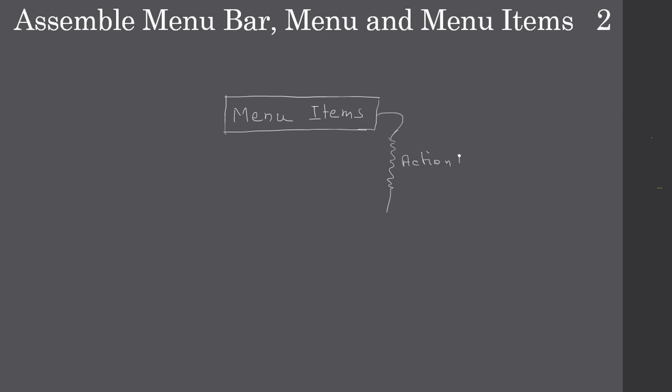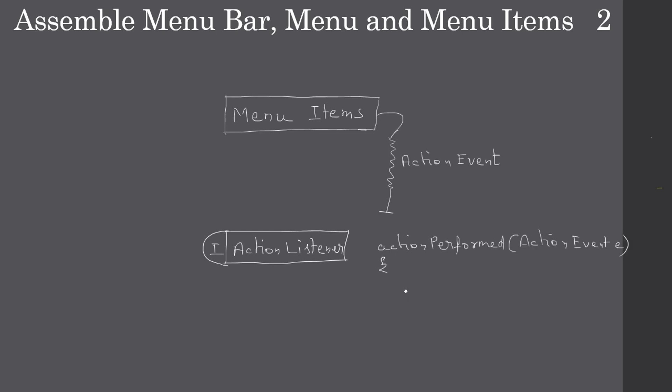Now let's talk about menu items. Menu items will produce an action event. To handle this action event we have to implement ActionListener. We implement the ActionListener interface, which provides a handler function called actionPerformed, and inside the body we can handle the menu item click event. That's all for this video — we will see the demo later. Thank you for watching, bye.